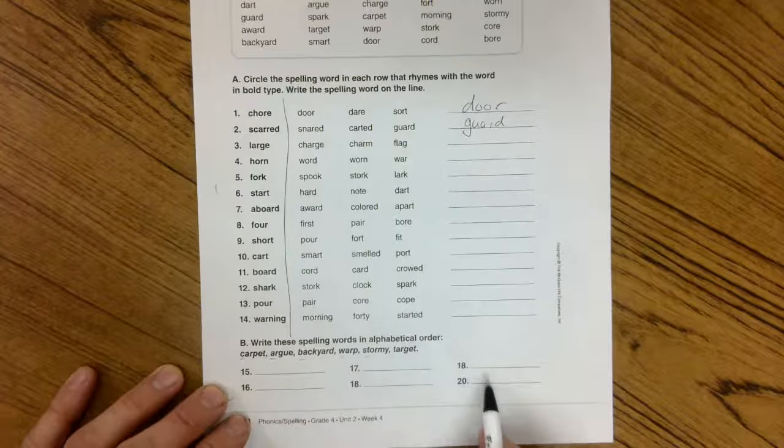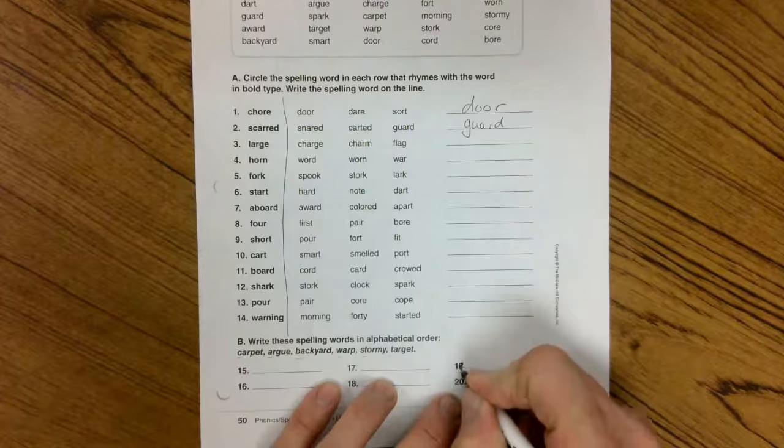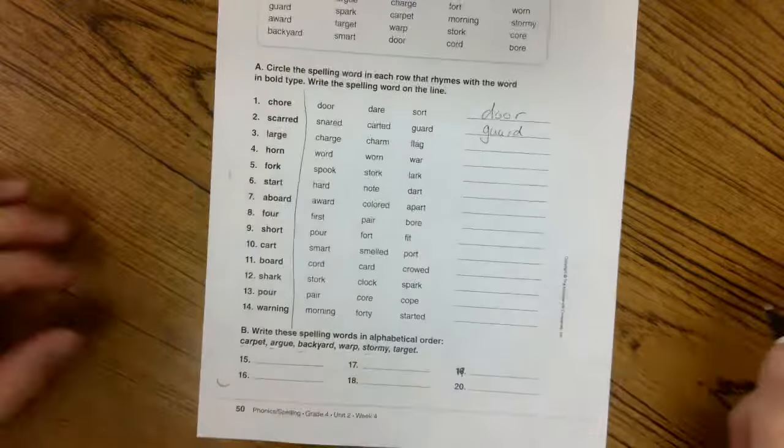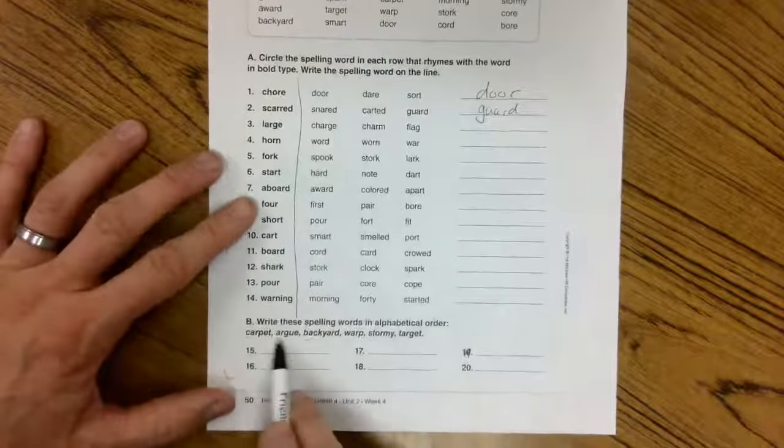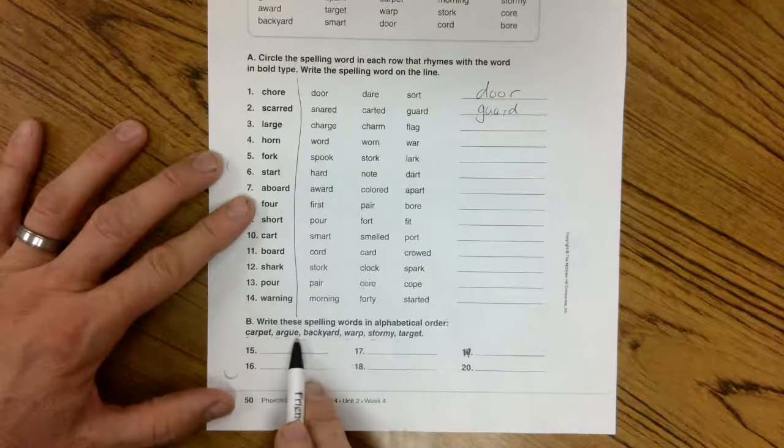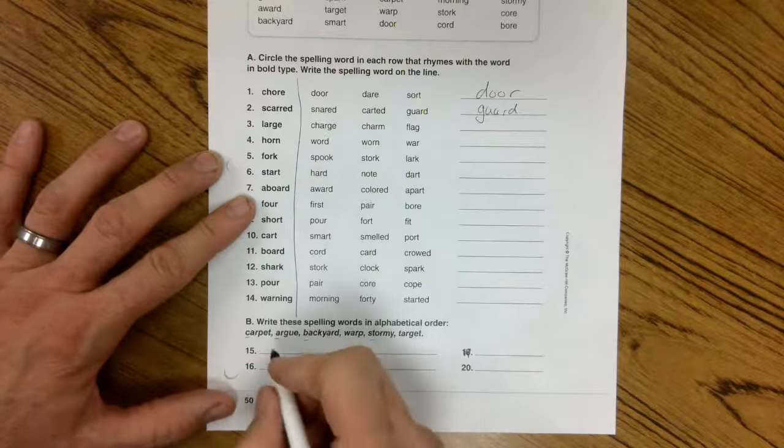15, 16, 17, 18, 19. Look at that. They made a mistake. 19 and 20. So the first one is A, A. Any other A words? No, argue.